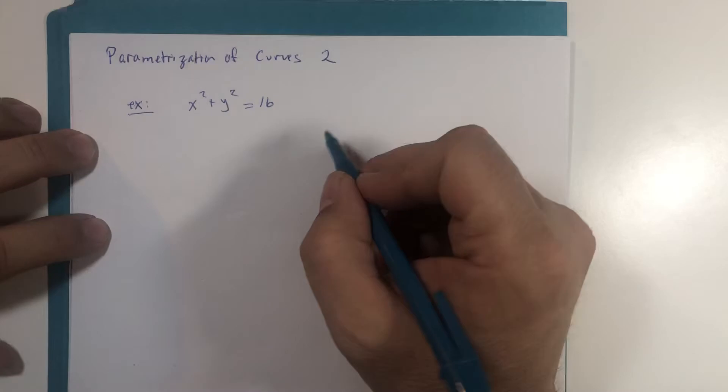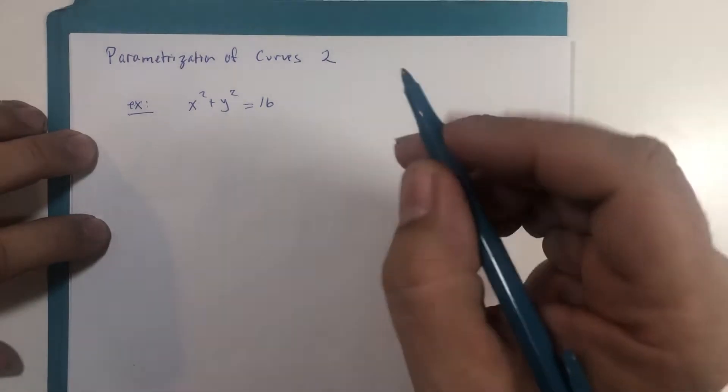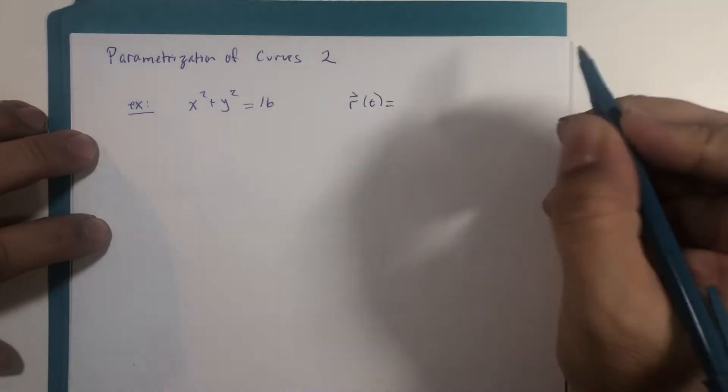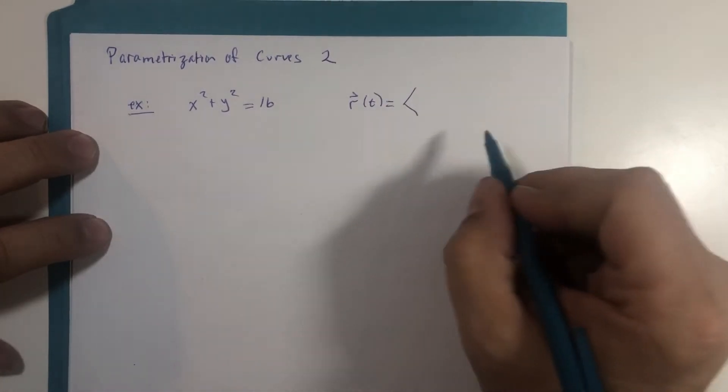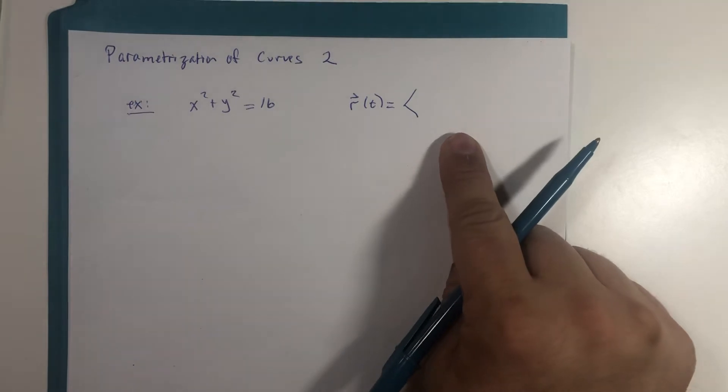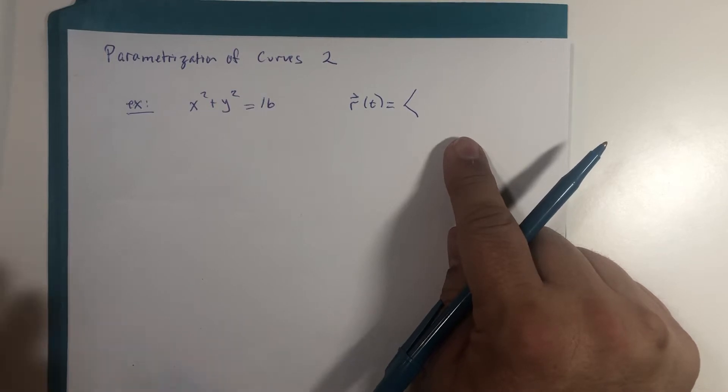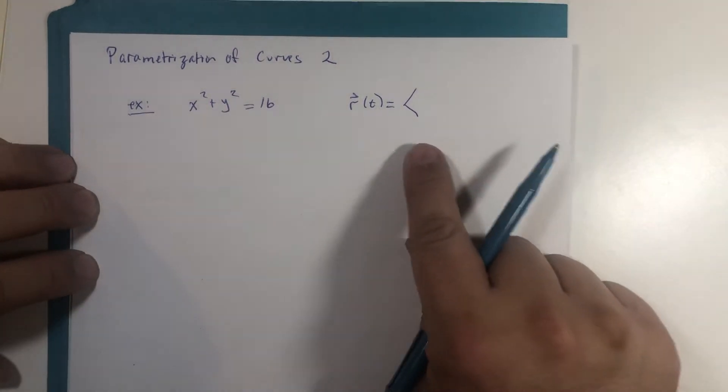We're going to convert it to a form R of T and again I'm using the component form of the vector. It fits nicely on my paper but there are other vector notations that are just as useful and some instructors prefer those notations, always look to the teacher for that advice.